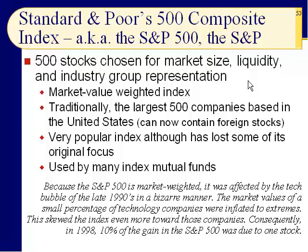The S&P 500 is a market-value weighted index, meaning the larger the company, the more influence its price change has on the index. Traditionally these were the largest 500 companies based in the United States, but now it contains a few foreign stocks. Why? Because some companies have gone global — some large American companies have been bought by foreign companies.